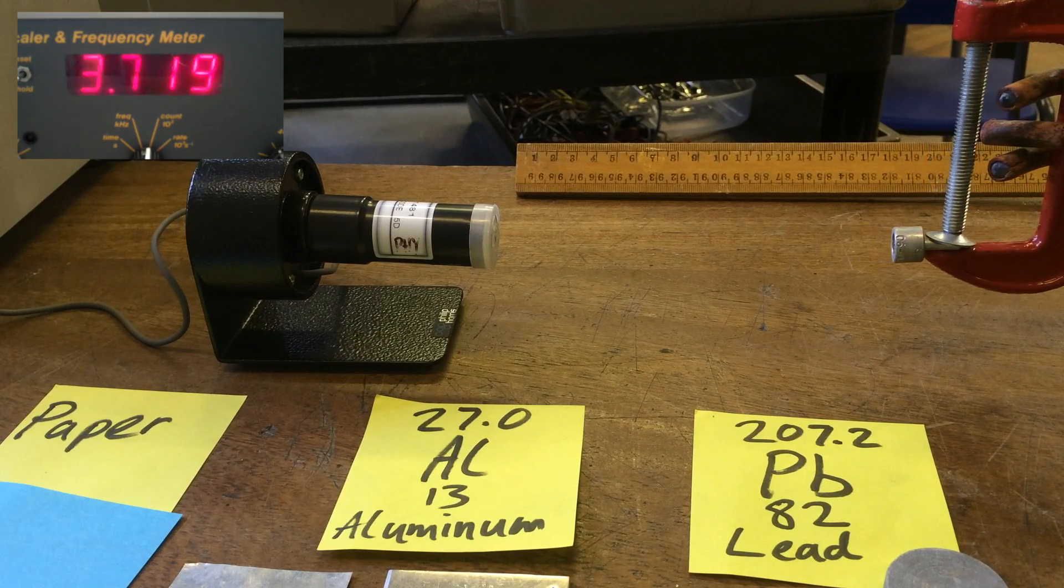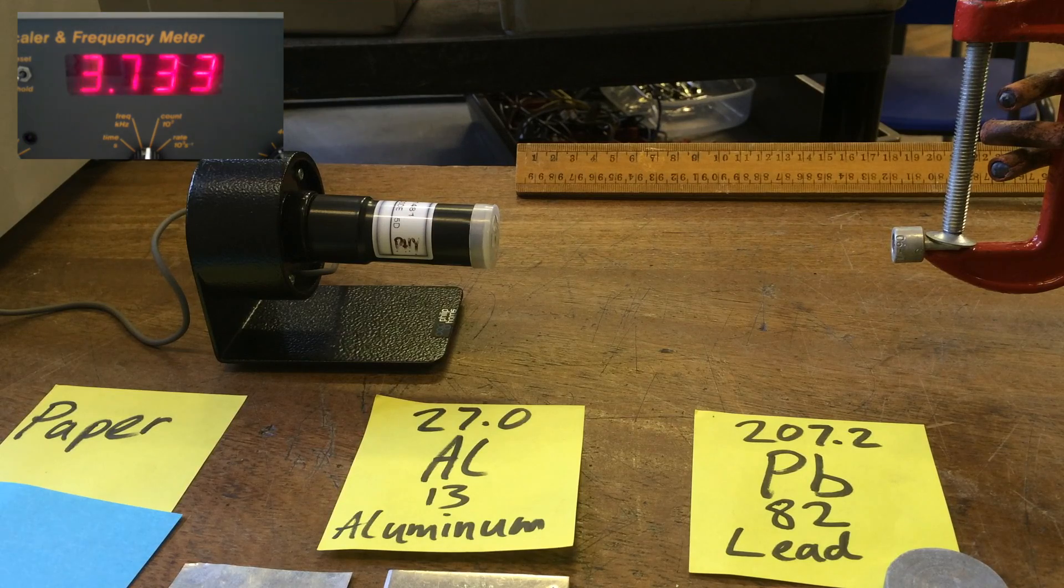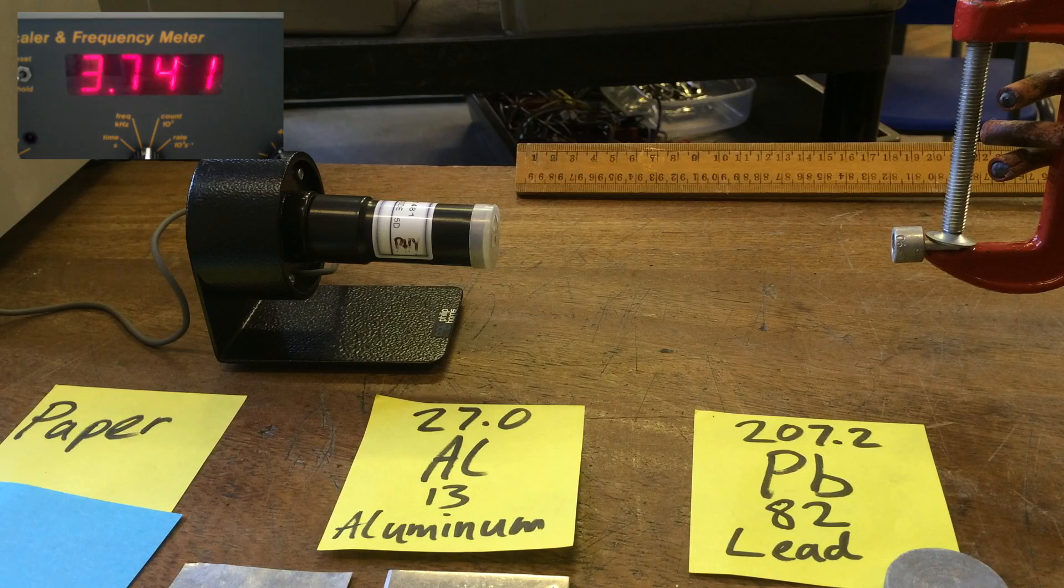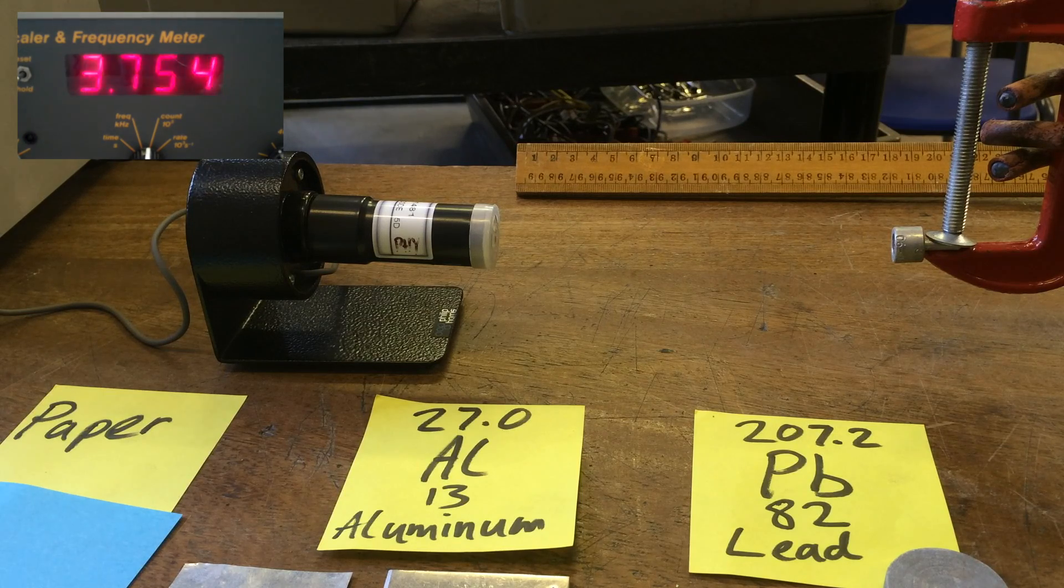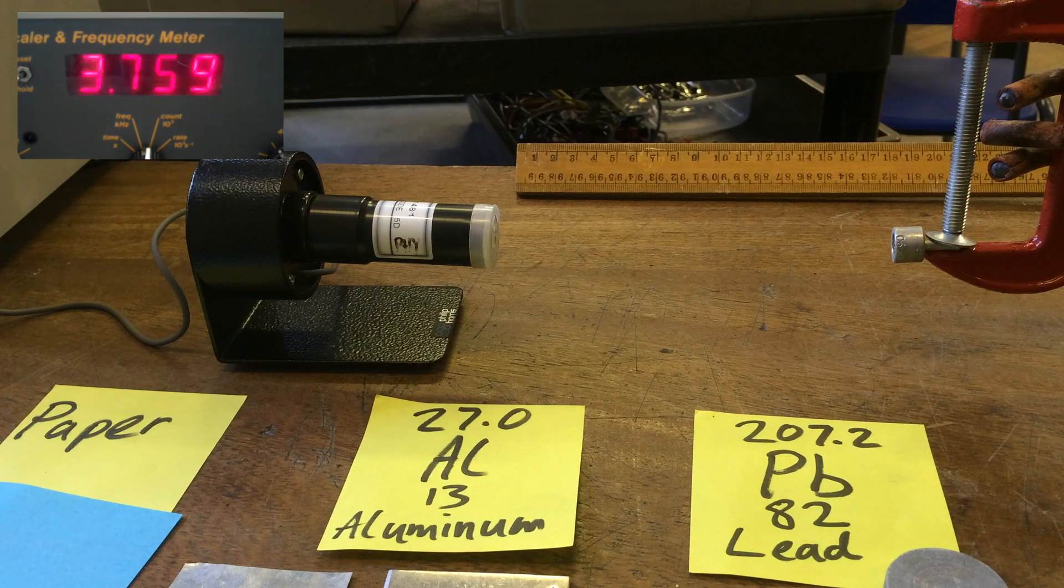It's still relatively high count. You have to go a good 15 centimeters away. The reason for that is because beta particles are a lot more penetrating than alpha particles. Alpha particles can penetrate about maybe two or three centimeters in air, beta particles can penetrate about 15 centimeters in air.